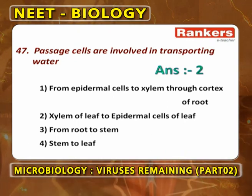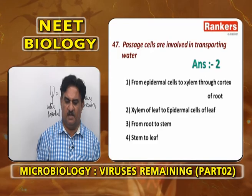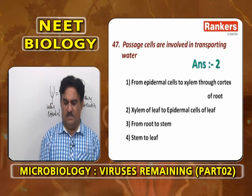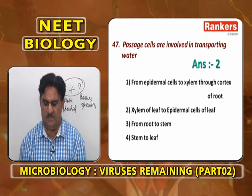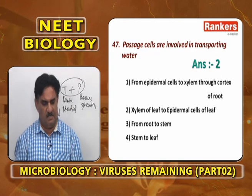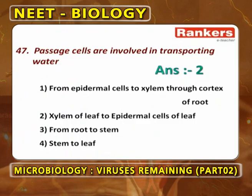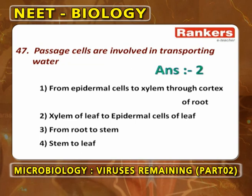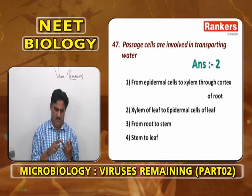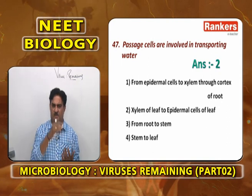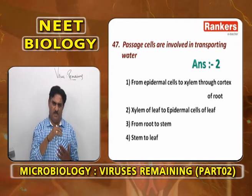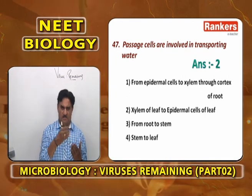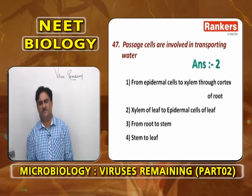Passage cells are involved in transporting water from epidermal cells to xylem through the cortex of the root. In the endodermis, there are some specialized cells which do not contain any Casparian bands — these are called passage cells. Water cannot pass through Casparian thickenings; it passes through passage cells (endodermal cells without Casparian thickenings) to enter the pericycle, and from xylem it is sucked upward. So first option is correct: from epidermal cells to xylem through cortex of the root.